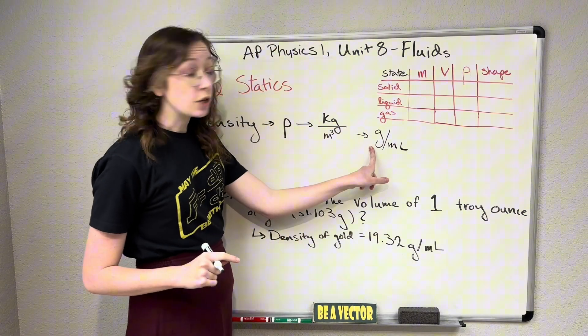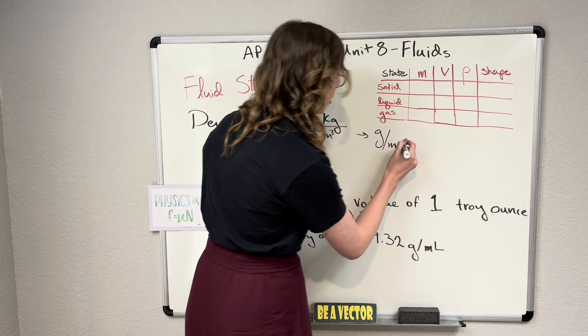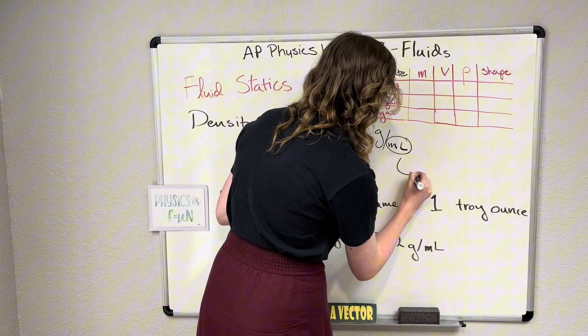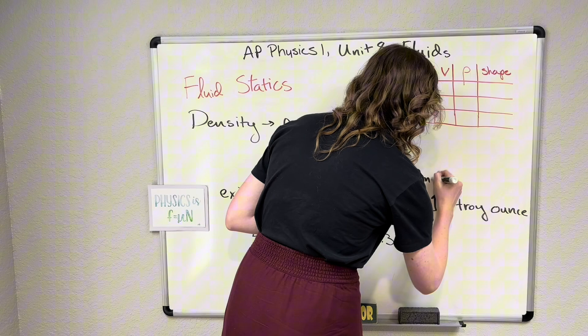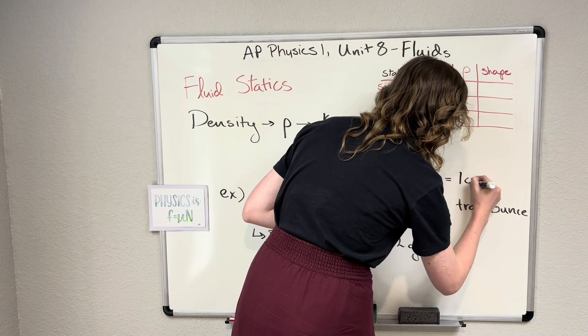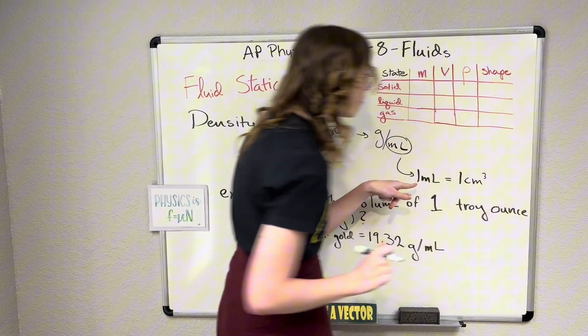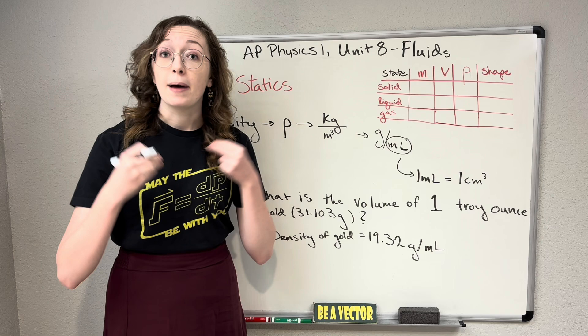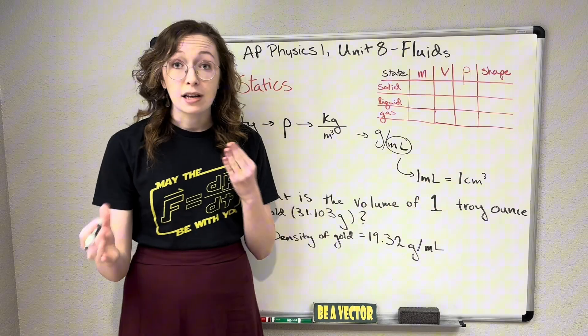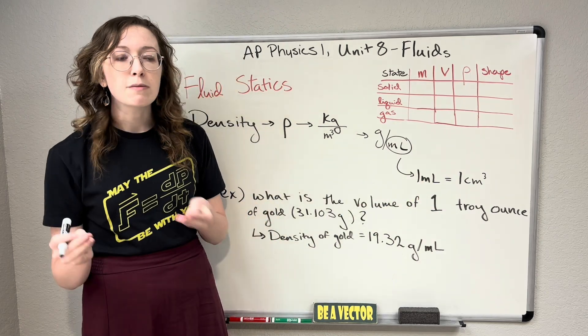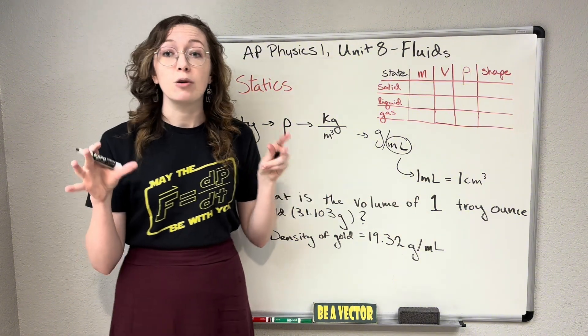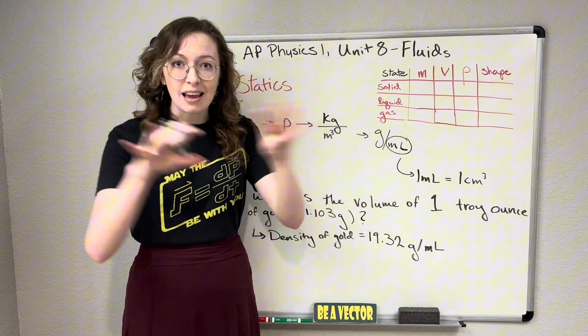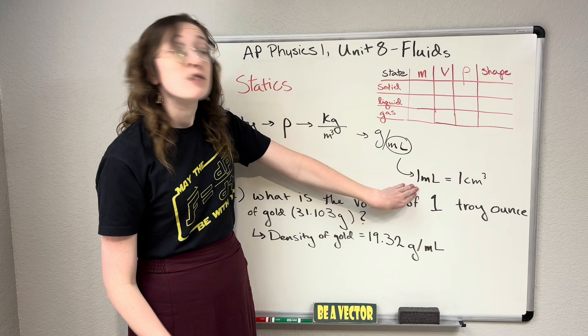One other quick note on our units here, grams per milliliter. Whenever you hear milliliters, just know that's another unit of volume, and one milliliter is entirely equivalent to a cubic centimeter. We often like to use milliliters to talk about liquid volumes and cubic centimeters to talk about solid volumes, because it's how we measure them, but they are entirely equivalent units. They're the same unit of space.